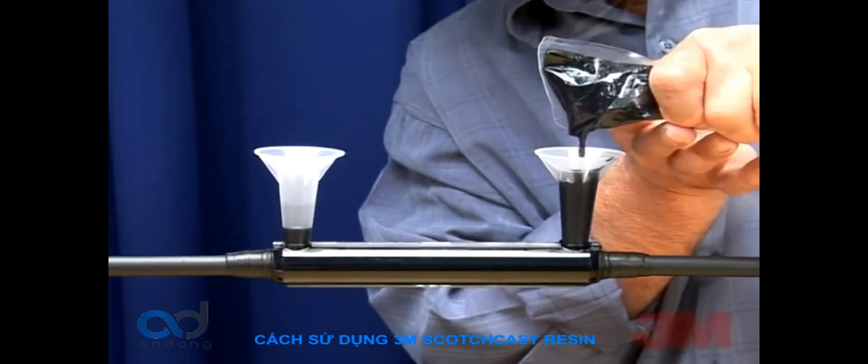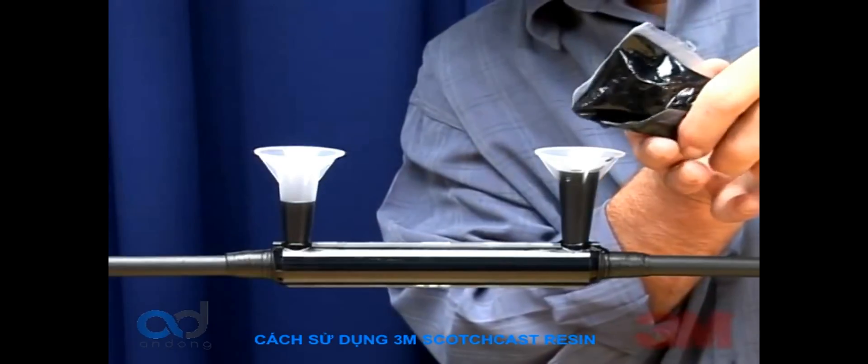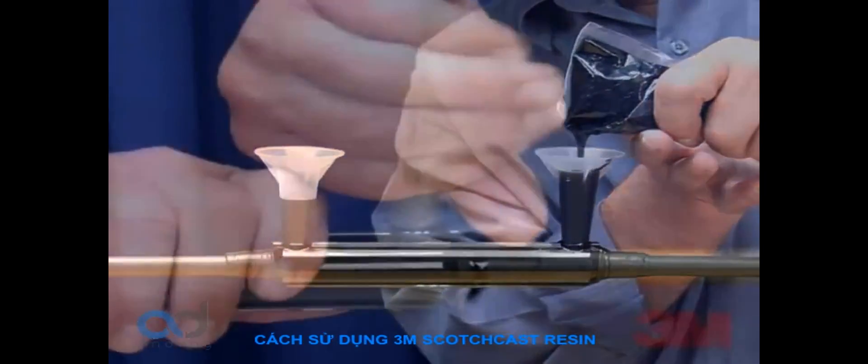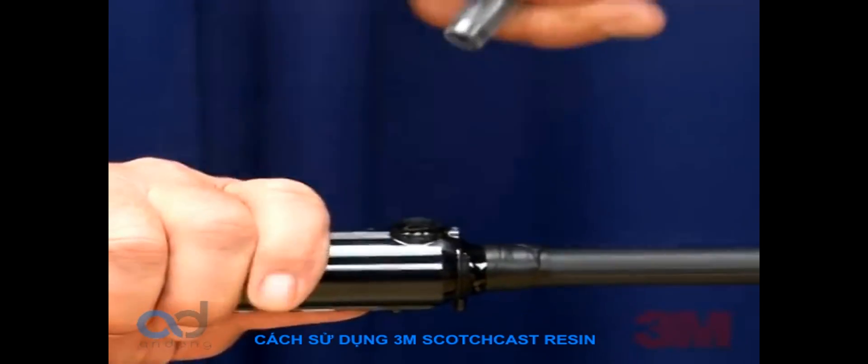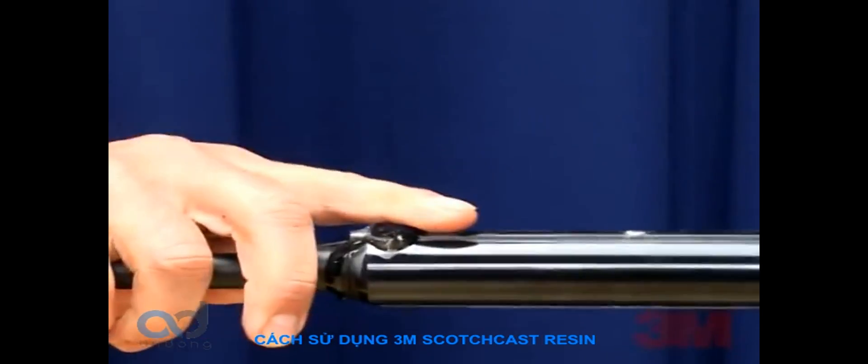Splice cure time is 1.5 hours and is submersible in 4 hours. Clip off the spouts if desired. Your 82-A1 power cable splice is now complete.